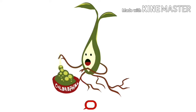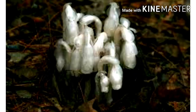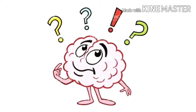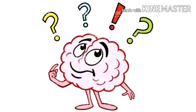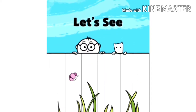We are all familiar with the word chlorophyll, and just because of chlorophyll, plants can prepare their own food. But what about those plants which do not have chlorophyll in them? Do they prepare their food on their own, or do they depend on others for their food? Let's see how non-green plants prepare their food.